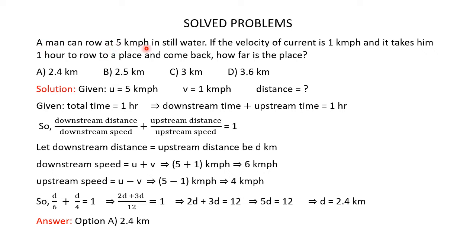Problem 3: A man can row at 5 km/h in still water. If the velocity of the current is 1 km/h, it takes him 1 hour to row to a place and come back. How far is the place? U = 5 km/h, V = 1 km/h, and total time is 1 hour, meaning downstream time plus upstream time equals 1 hour. Since time equals distance divided by speed, we write: downstream distance/downstream speed + upstream distance/upstream speed = 1.